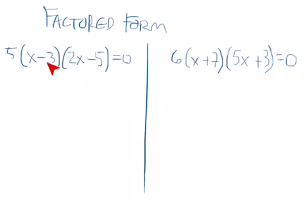Notice this is 5 times x minus 3 times 2x minus 5 equals 0. So let's solve it. Notice I have these three things multiplied together to give me 0. It's tempting to try and multiply it all out, but we don't have to. It's already equal to 0, so it's already factored. Since those things are multiplied together,